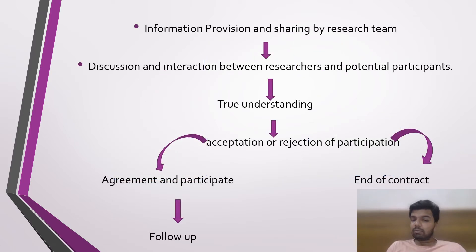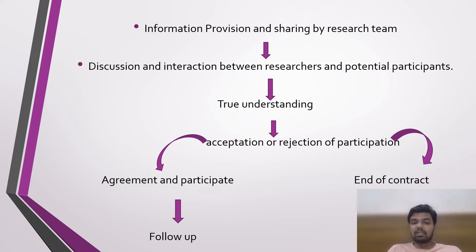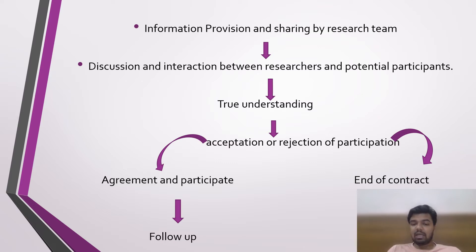This is the flowchart of the informed consent process. First, information is provided and shared by the research team with the participants. Then there is discussion and interaction between the researchers and the potential participants. After true understanding is reached, there is either acceptance or rejection of participation. If there is acceptance, there is an agreement to participate and follow-up. If there is rejection, there is an enrollment contract.